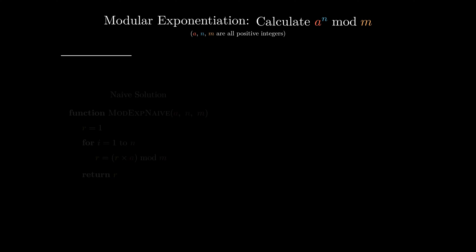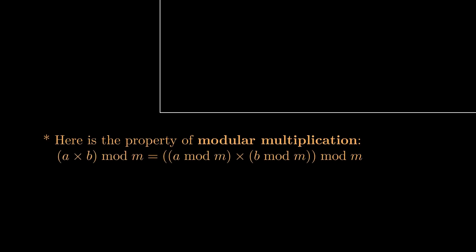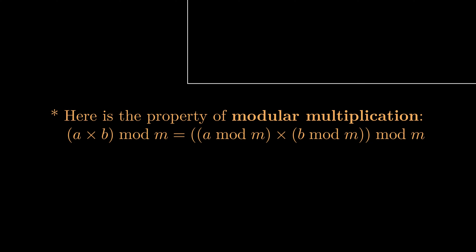Let's first look at the naive algorithm, in which there are n iterations. In each iteration, we will multiply the result by a and then mod m. Side note: the mod operation is distributive. In other words, a times b mod m equals a mod m times b mod m, then mod m again.